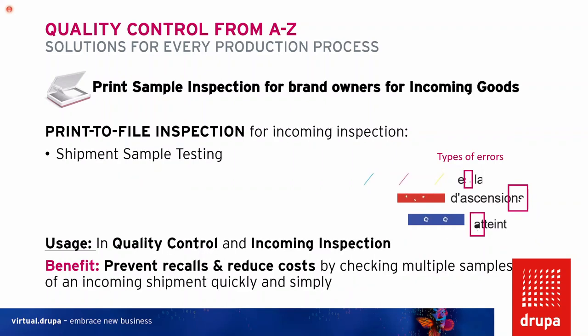Another solution is that your customers — brand owners or pharmaceutical companies — can use scanner-based systems for incoming inspection, where they check the shipment you send them. They can check against the PDF for the same types of errors. The usage is in the incoming control department or quality control. The big benefit is that you can prevent recalls and reduce costs by checking multiple samples of the incoming shipment very quickly and simply with print inspection solutions.